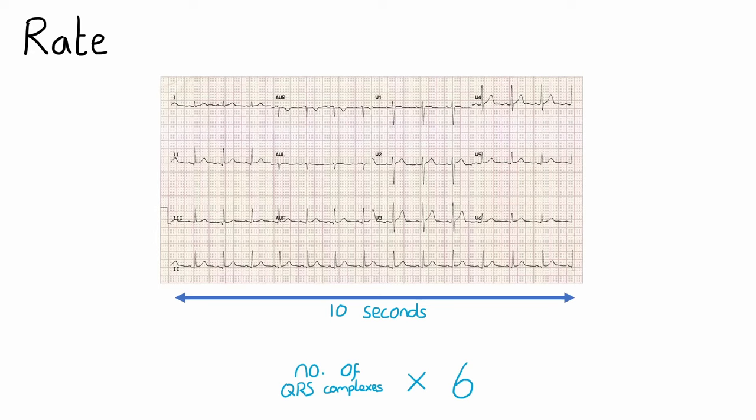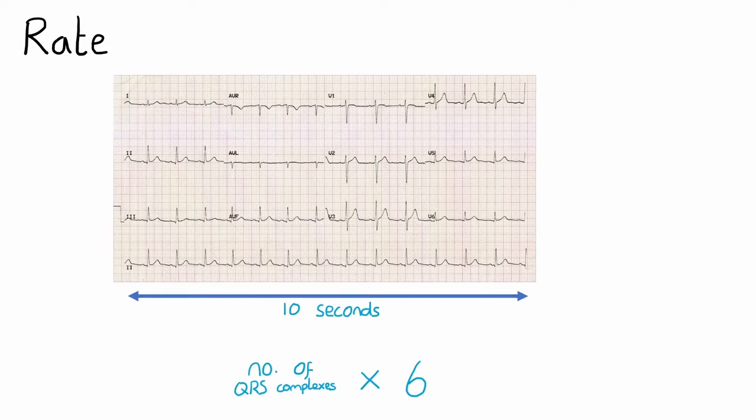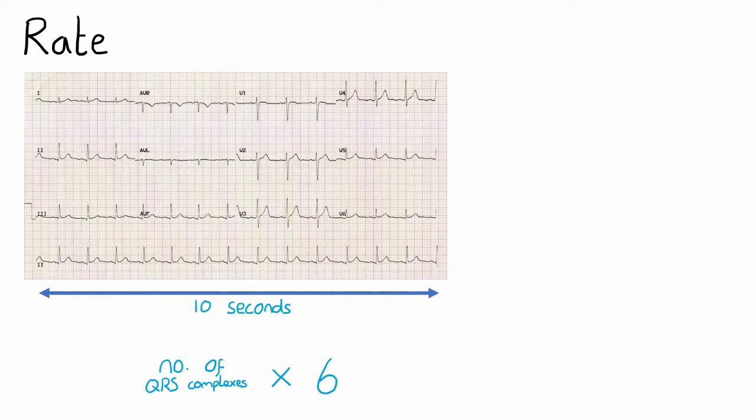Again, feel free to pause the video if you like and take a moment to calculate the heart rate. 14 QRS complexes multiplied by six gives us 84 beats per minute. This particular ECG has a regular rhythm, so you could use either method here.